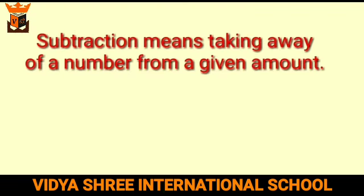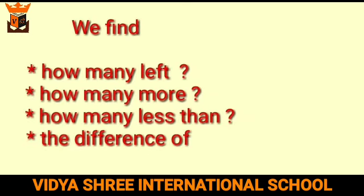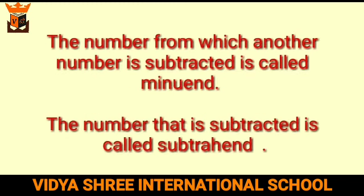We already know that subtraction means taking away a number from a given amount. The terms 'taken away' and 'find the difference' imply subtraction. We find how many are left, how many more, how many less than, and the difference through subtraction. The number from which another number is subtracted is called the minuend, and the number that is subtracted is called the subtrahend.